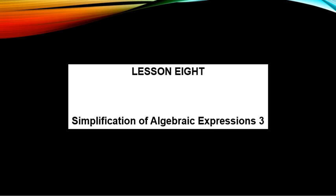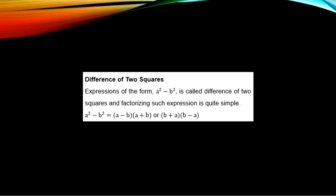Lesson 8 is a continuation of Lessons 6 and 7. In this lesson, we want to talk about Difference of Two Squares. Expressions of the form A squared minus B squared are called Difference of Two Squares. The meaning is: if you have two terms such that one is squared, the other is also squared, and the two terms are connected with a minus sign, you call them Difference of Two Squares. Their factorization is quite simple.